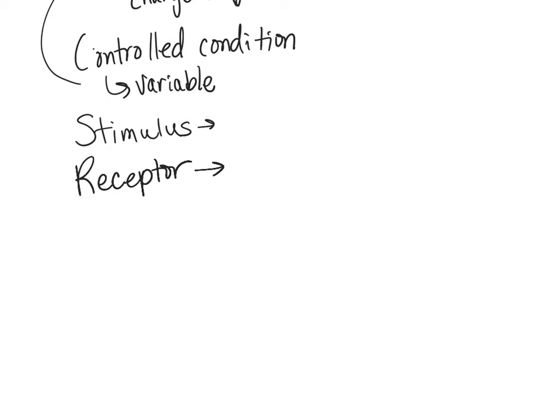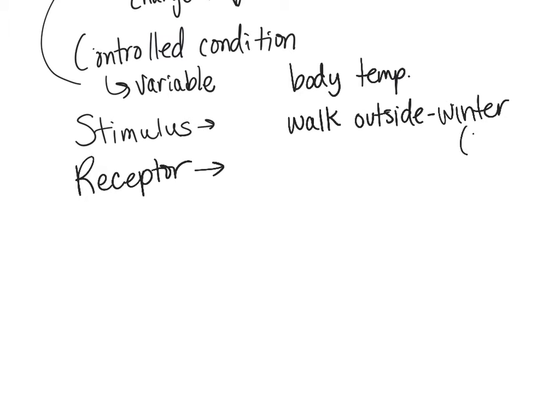Our controlled condition is our variable — something we're monitoring, like body temperature. A stimulus is something that changes that; let's say we walk outside and it's winter, so our body senses the cold. The receptor monitors changes in those conditions and sends input to the control center — for example, temperature sensors in our skin pick up on the stimulus.